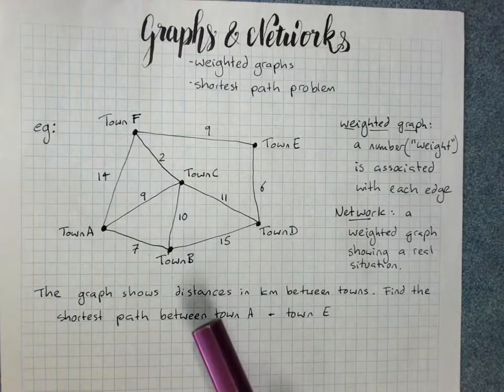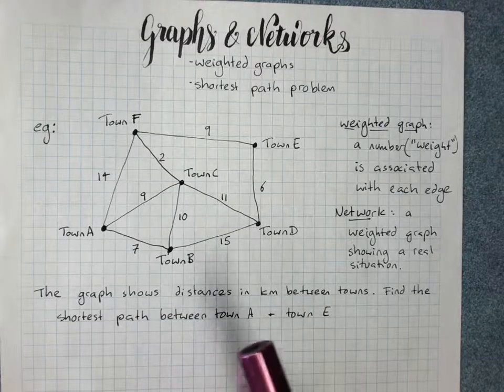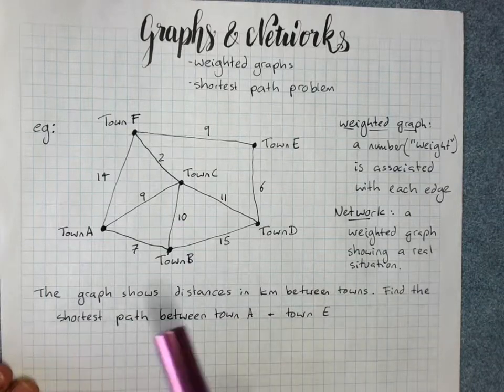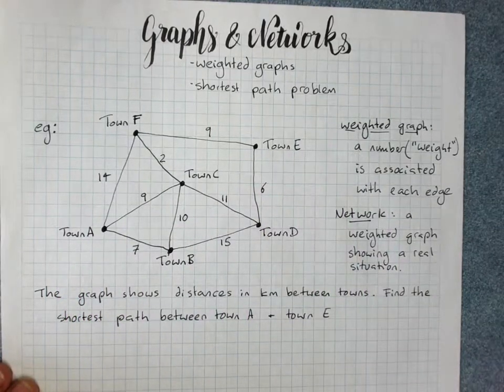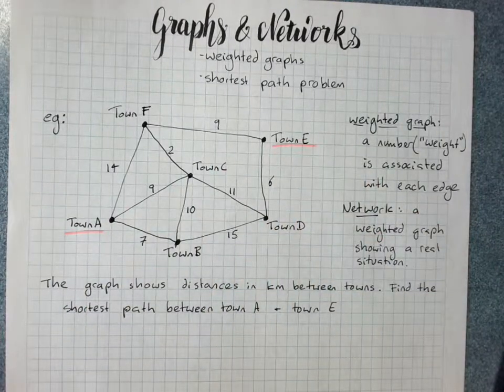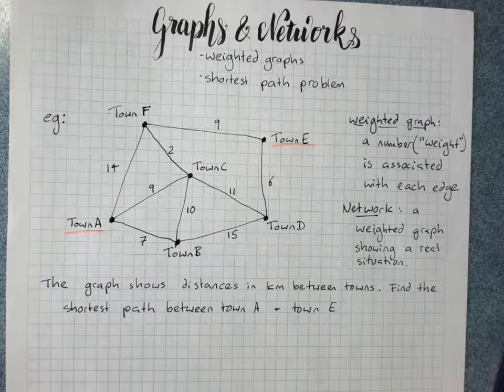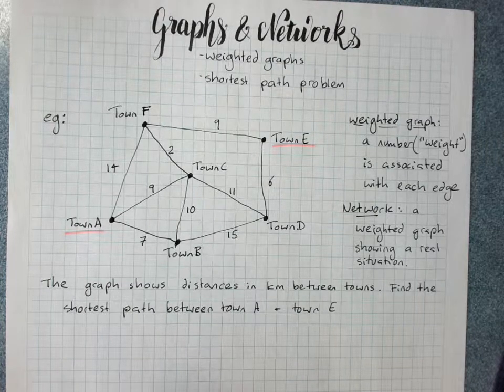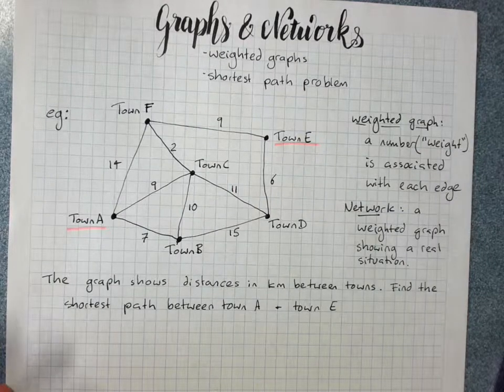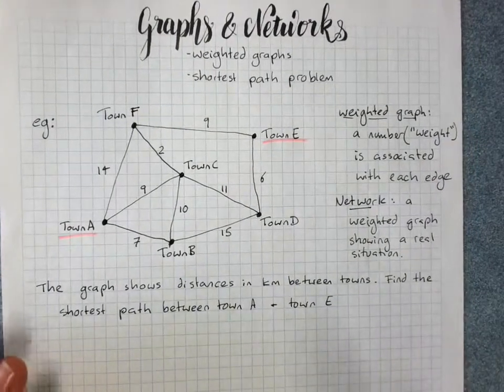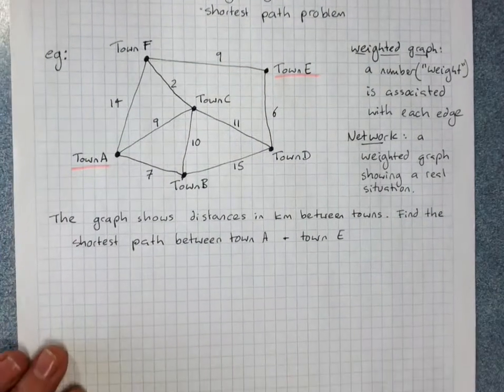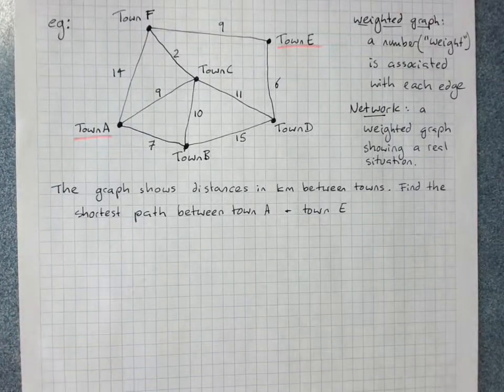Often we want to minimize the path that we take in terms of its weight. So here, find the shortest path between town A and town E. You can just do it for a really small graph by looking, but once you've got more than a couple of options it gets quite tricky. There's a really nice method of solving it.